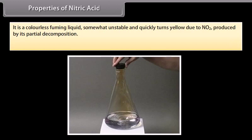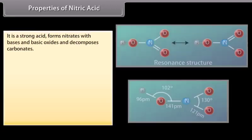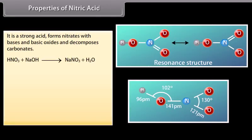NO and NO2 formed in the Ostwald process are absorbed in water to give dilute HNO3. It is then concentrated by distillation up to 68% by mass; further concentration up to 98% is achieved by distilling over concentrated H2SO4. Properties of nitric acid: It is a colourless fuming liquid, somewhat unstable, and quickly turns yellow due to NO2 produced by its partial decomposition. It has a corrosive action on skin. It is a strong acid that forms nitrates with bases and basic oxides and decomposes carbonates.